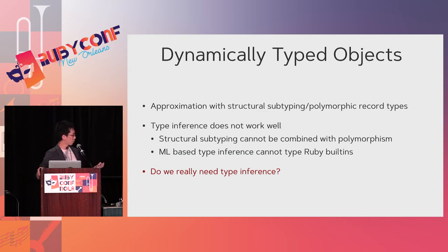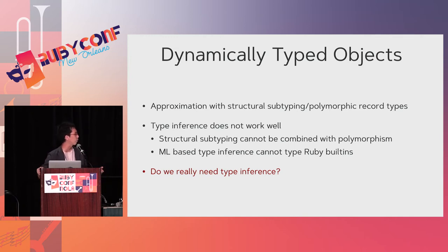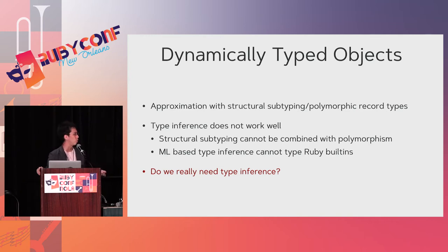So we have a conclusion: we can give types to Ruby objects using structural subtyping or polymorphic record types, which is a good approximation of Ruby's type semantics. Subtyping is defined by whether a type has a method or not — a really good fit for Ruby's semantics. But the problem is type inference does not work well. With structural subtyping, we cannot infer polymorphic types; with ML-based type inference, we can infer polymorphism but cannot type some Ruby built-ins. So the question is: do we really need complete type inference for Ruby?